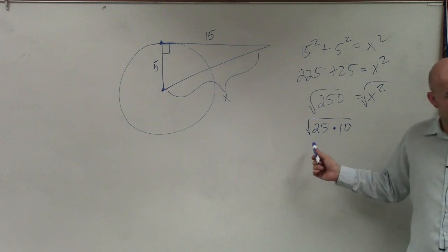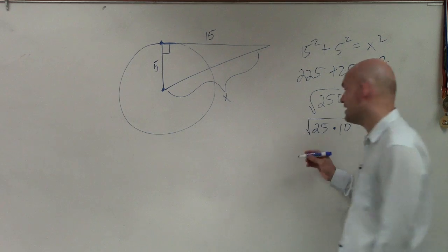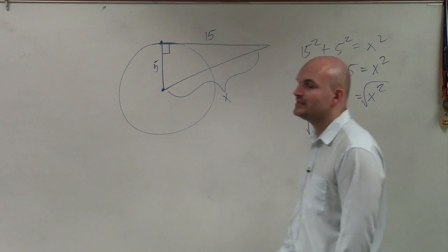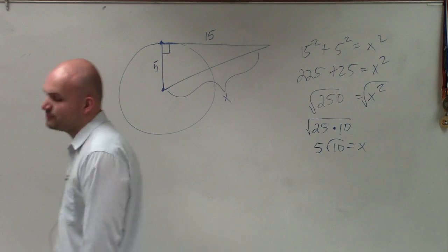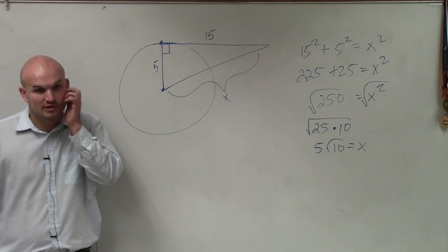Then, can I take the square root of 25? 5 times 5... so 5 square root of 10 equals x. So that would be the simplified version. And if you plug in 5 times the square root of 10, you would get the exact same thing as the square root of 250.